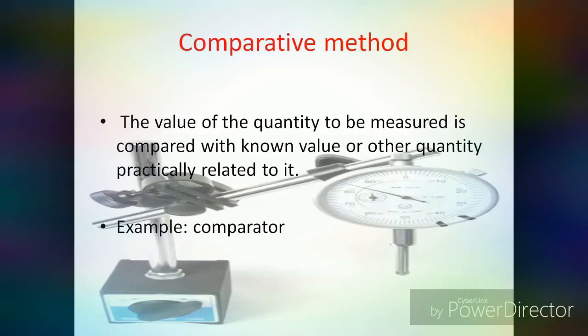This one is the Comparative Method. In this method, the value of the quantity to be measured is compared with a known value or another quantity practically related to it. Only the deviation between the gauges is determined. Example: dial indicator or other comparators.